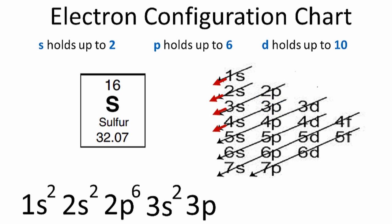If you add them up, 2 plus 2 plus 6 plus 2 plus 4, that gives you 16, the number of electrons in sulfur. So this is the electron configuration for sulfur, and this is Dr. B.T. Thanks for watching.